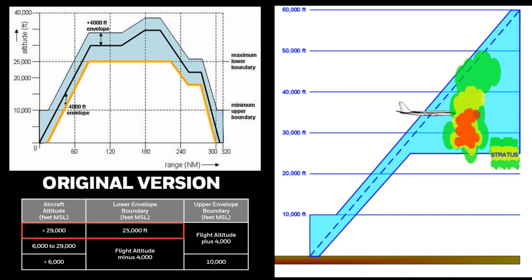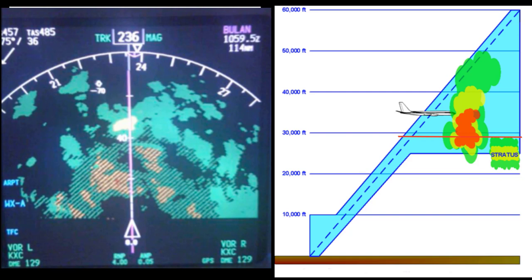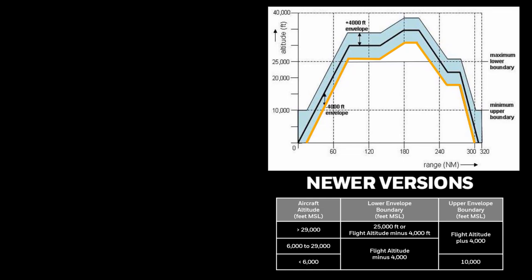Ice crystals at high altitudes are less reflective, so the 25,000-foot lower boundary was selected to show the more reflective part of the cell, providing overflight protection. However, in areas with high stratus around 25,000 feet, the display could fill with returns. One method for dealing with this is to go into manual mode and select an altitude slice 4,000 to 5,000 feet below the aircraft altitude but above the stratus layer. The newer version introduces convective weather discrimination (CWD): in the absence of convective weather, the bottom of the envelope remains 4,000 feet below the flight path, but if an area of convective weather is detected, the envelope's lower boundary is extended down to 25,000 feet in that area.